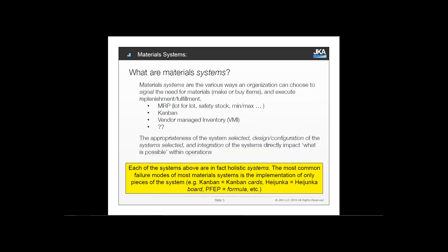Material systems are the way that an organization signals its needs for materials and executes fulfillment. There's a whole array of systems, and we emphasize that it's the appropriateness of the system selected, how you configure it, and how you choose to integrate those systems that drive what's possible inside operations. A common failure mode is that organizations too often implement only pieces of the system — the Kanban system is viewed as just Kanban cards, heijunka is viewed as just a heijunka board.